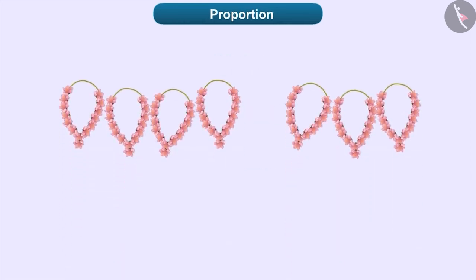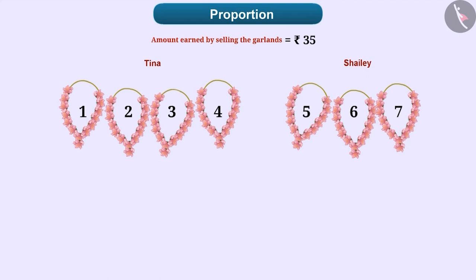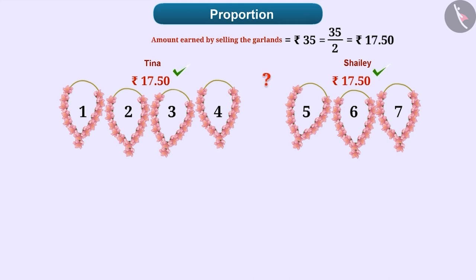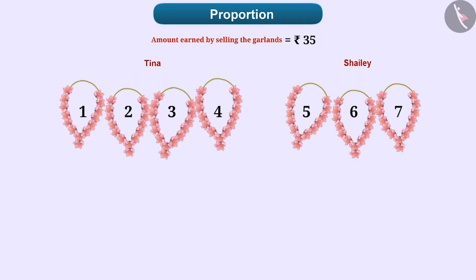Let us understand proportion with another example. Tina and Shelly have made 7 garlands together. They earned Rs. 35 by selling them. Since Tina has made 4 and Shelly has made 3 garlands, then how many rupees should Tina and Shelly get? We can divide Rs. 35 into 2 equal parts, then each part will be 17.5. In this way, Tina can get Rs. 17.5 and Shelly can get Rs. 17.5. But will that be correct? This will not be correct. Since Tina has made more garlands, she should get more money than Shelly. This will be correct only when Tina and Shelly get the amount in the same proportion in which they have made garlands.